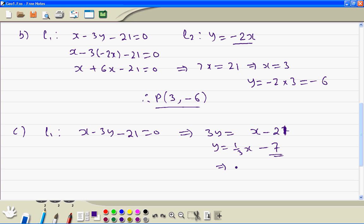So therefore the intercept C is minus 7.